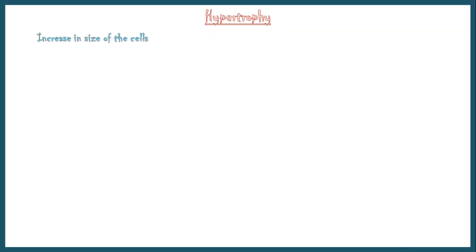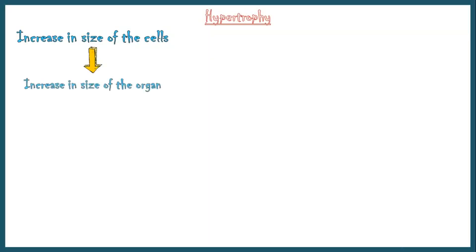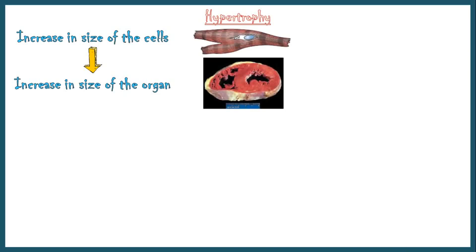First, let's discuss about hypertrophy. It refers to an increase in the size of cells, resulting in an increase in the size of the organ. This image shows a normal myocardial cell along with normal ventricular walls.